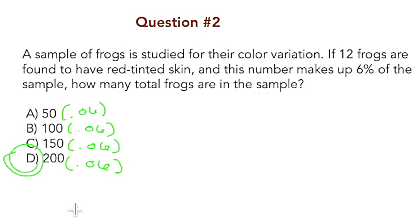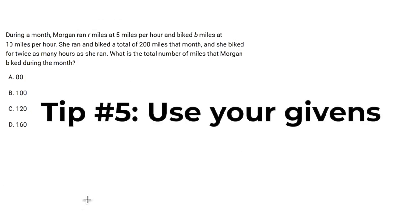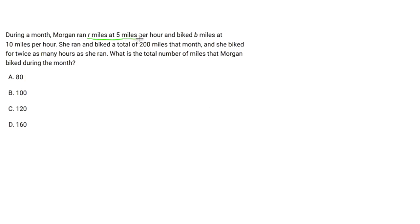And our final tip is tip number 5, which is use your givens. So let's look at this word problem here. During a month, Morgan ran R miles at 5 miles per hour and biked B miles at 10 miles per hour. She ran and biked a total of 200 miles that month, and she biked for twice as many hours as she ran. What is the total number of miles that Morgan biked during the month? So miles biked is what we're looking for here. You'll notice that as I'm reading, I'm already going ahead and underlining my givens, which I can parse out because I know that variables and numbers are what I'm looking for here. And words like total.